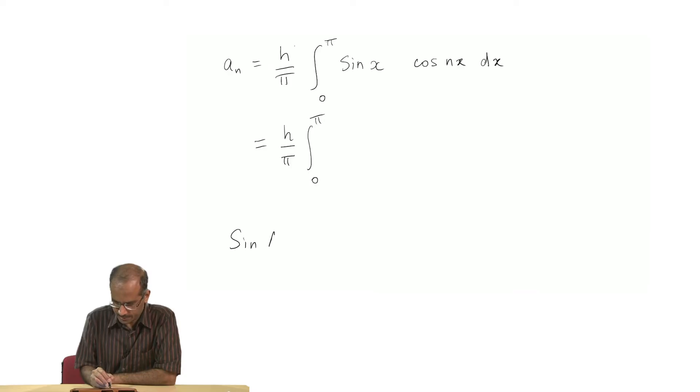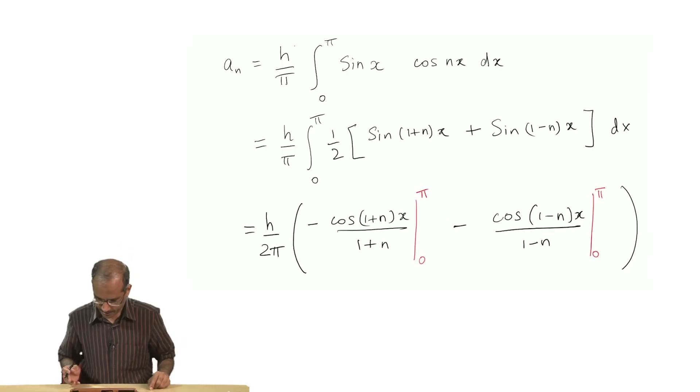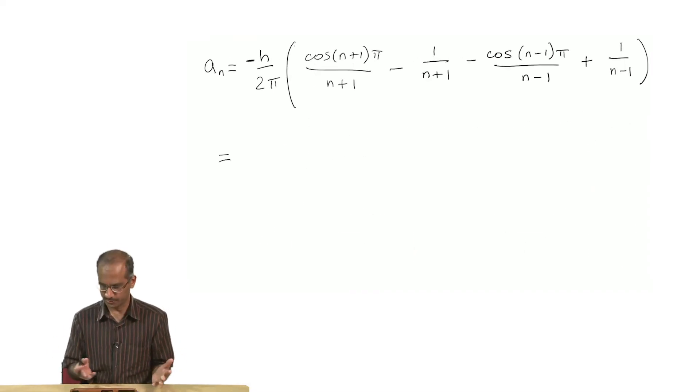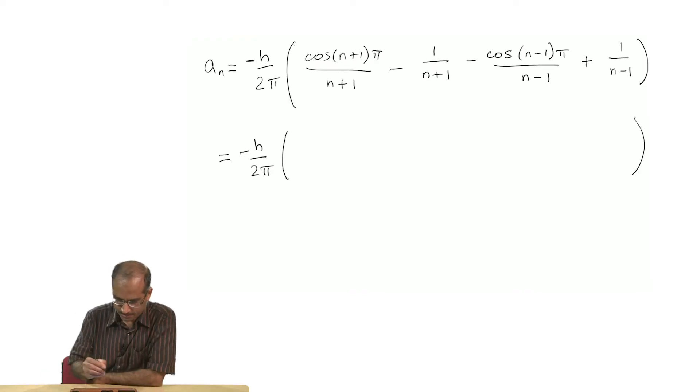I need this relation: sin a cos b will be half of sin(a+b) plus sin(a-b). I have done the integral and the limits are there to be put in. There were originally 2 terms, putting these 2 limits we get 4 terms. Before I take LCM, let me also add this: cos(n+1)π is equal to (-1)^(n+1).